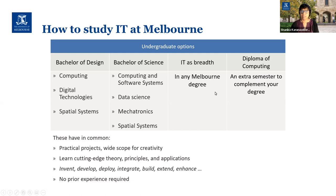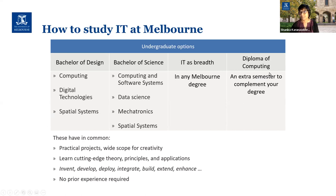If you don't want to do IT as a major, you can do IT as breadth — this is the Melbourne Model. You can do up to six subjects of breadth and fit IT there. Or if you want a little bit more IT without making it a major, you can do an extra semester and add a diploma in computing, which is essentially those six subjects plus two more, making it a 100-point degree.